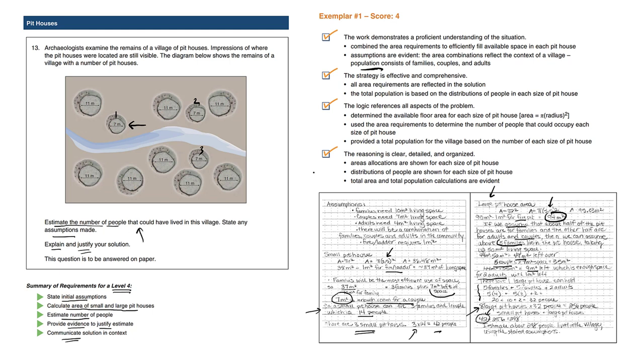Going back to the original question, it says estimate the number of people that could have lived in the village. It's probably not the best idea to say zero, just because the pithouses being empty would be silly. We're going to try to fill these up. That's why this person wrote this answer in this way.